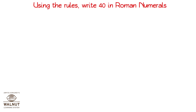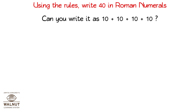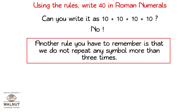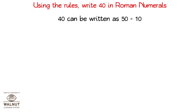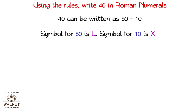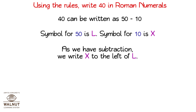Using the rules, write 40 in Roman numerals. Can you write it as 10 plus 10 plus 10 plus 10? No. Another rule to remember is that we do not repeat any symbol more than 3 times. So we need to introduce another symbol here: L, whose value is 50. 40 can be written as 50 minus 10. Symbol for 50 is L, symbol for 10 is X. As we have subtraction, we write X to the left of L. X followed by L. That is our answer.